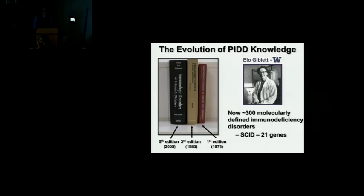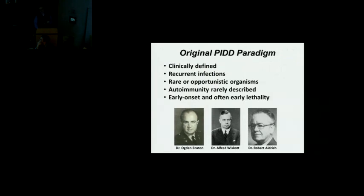The first molecularly defined immunodeficiency was identified by Gila Giblett here at the University of Washington — she was a hematologist and biochemist who identified adenosine deaminase deficiency, defined enzymatically in 1971, just prior to the first edition. Then in the early 1990s, genes started to be connected to immunodeficiency diseases, and we now have in the neighborhood of 300 single-gene defects that cause primary immunodeficiency. The field has really exploded.